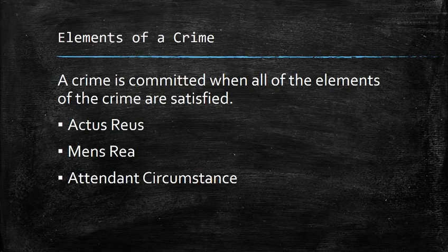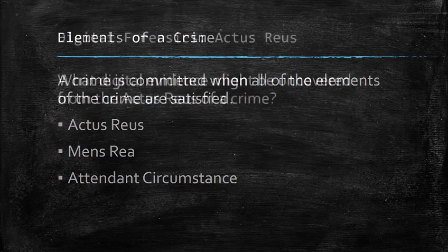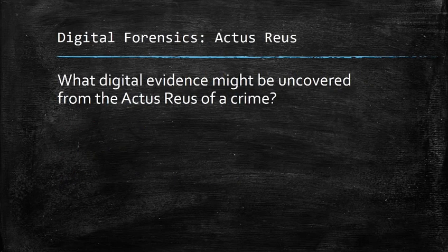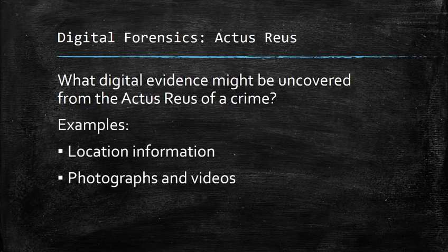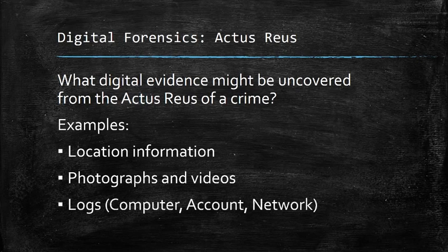As we saw in an earlier video, a crime is committed when all of the elements of the crime are satisfied: you have the actus reus, the mens rea, and attendant circumstance. What digital evidence might be uncovered from the actus reus of a crime? You have things like location information showing that the person was there, photographs and videos showing what they were doing, and logs — computer logs, account logs, network logs — showing how they were using a computer, where they were sending information, and where they were receiving information from.